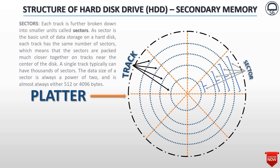Each track is further broken down into smaller units called sectors. A sector is the basic unit of data storage on a hard disk. Each track has the same number of sectors, which means that the sectors are packed much closer together on tracks near the center of the disk. A single track typically can have thousands of sectors. The data size of a sector is always a power of 2, and is almost always either 512 or 4096 bytes.